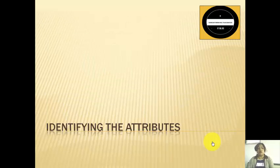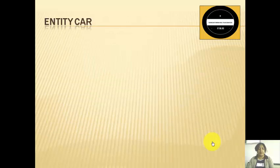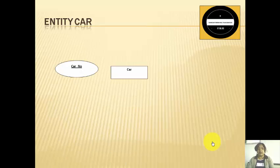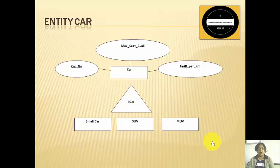Once we have found the entities, we have to identify the attributes of each entity, taking one entity at a time. Small car, SUV, and MUV are types of cars — they are child entities, not individual entities; they are dependent on the car entity. The entity car has attributes like car number as the primary key, maximum seats available, and tariff per kilometer. A car has three different types — small car, SUV, and MUV — representing an inheritance, which we can show in the ER diagram.